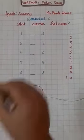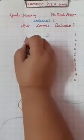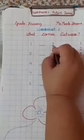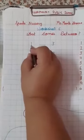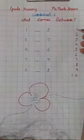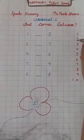What comes between? Let's start. What is this? 1. And what is this? 3. What comes between 1 and 3? Speak. 1, 2, 3.